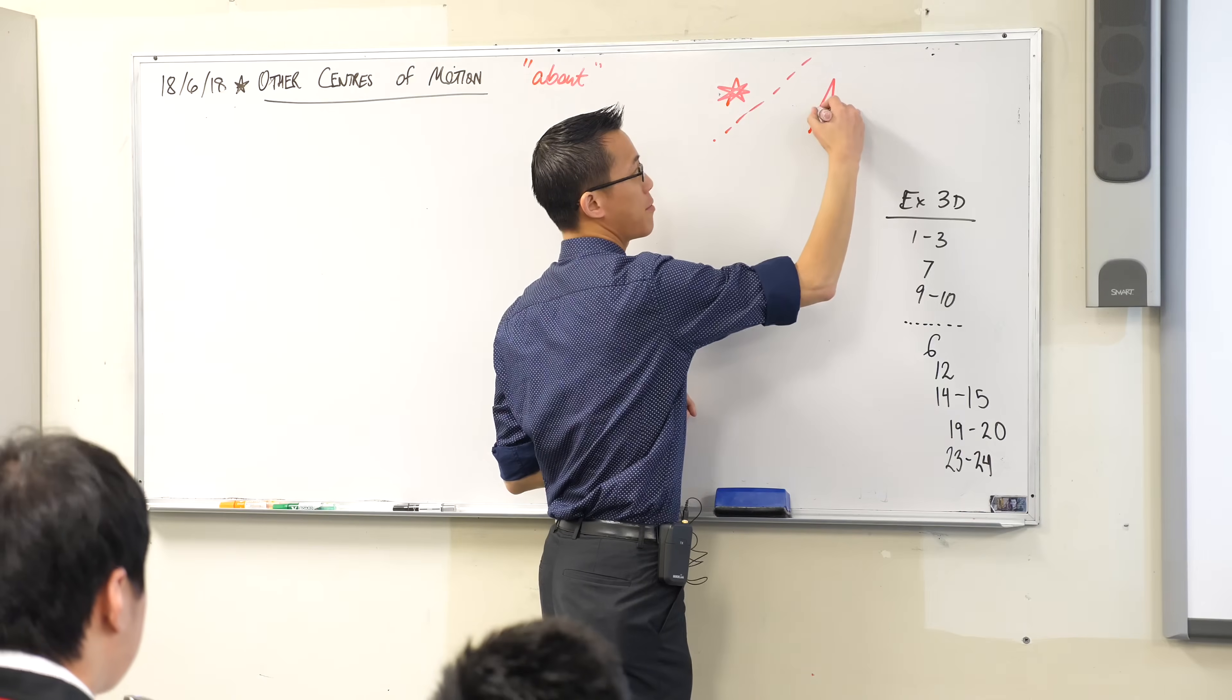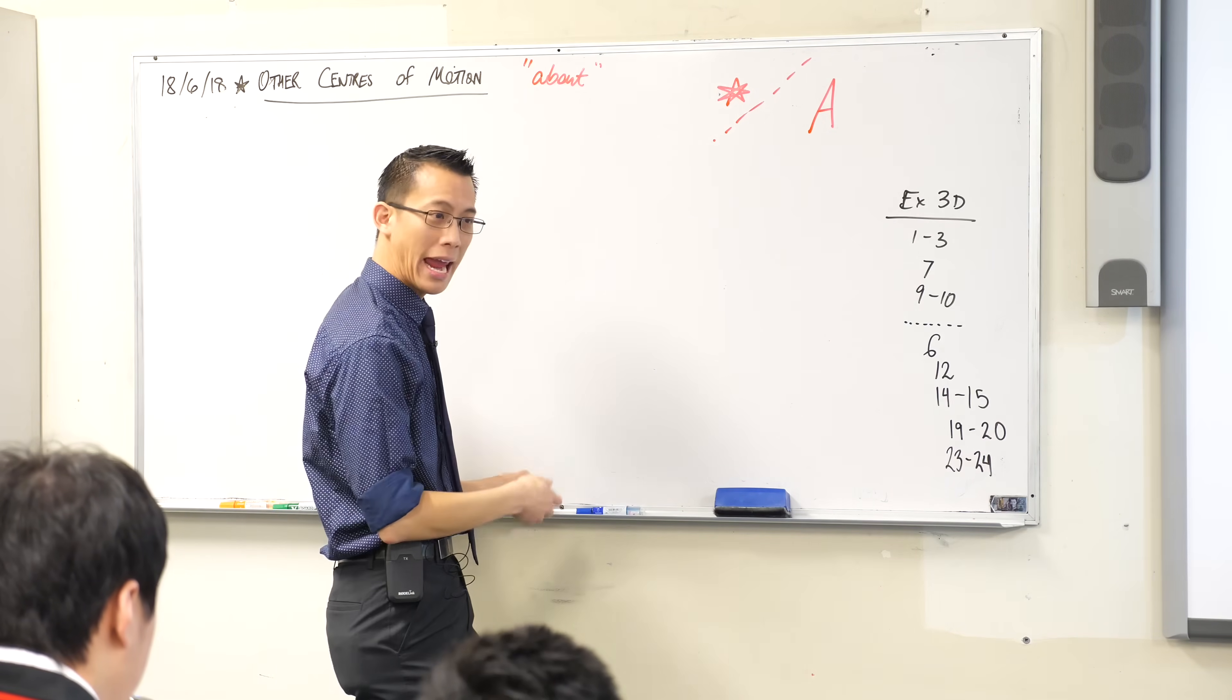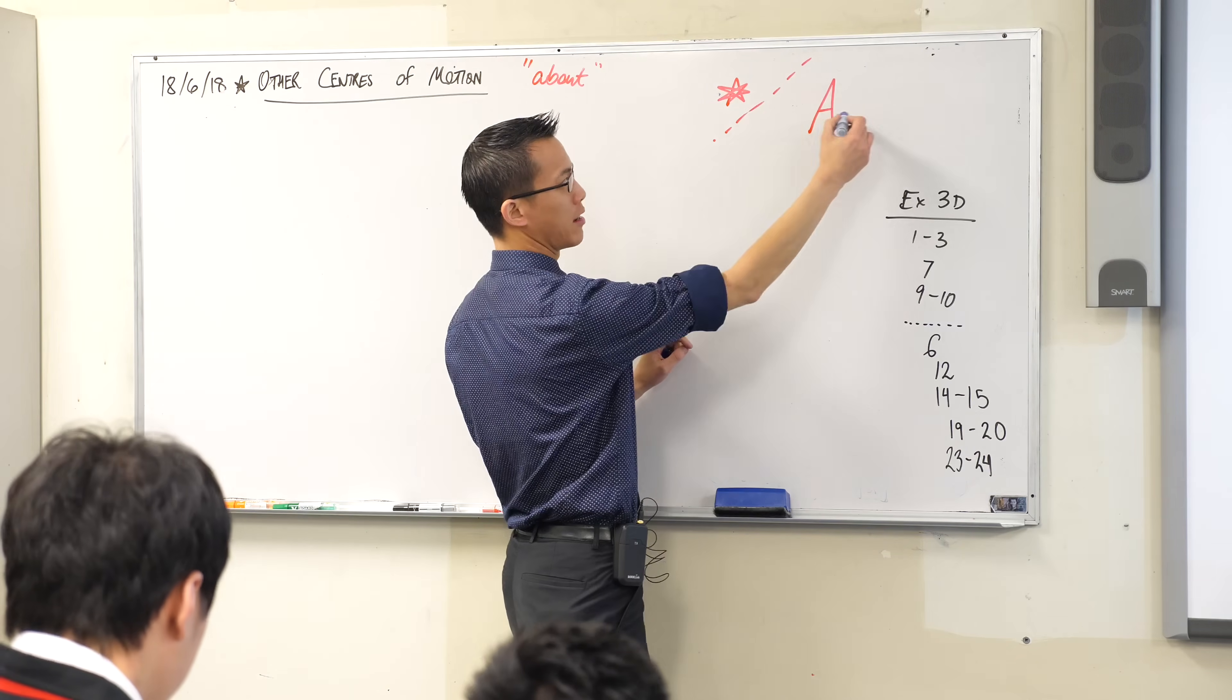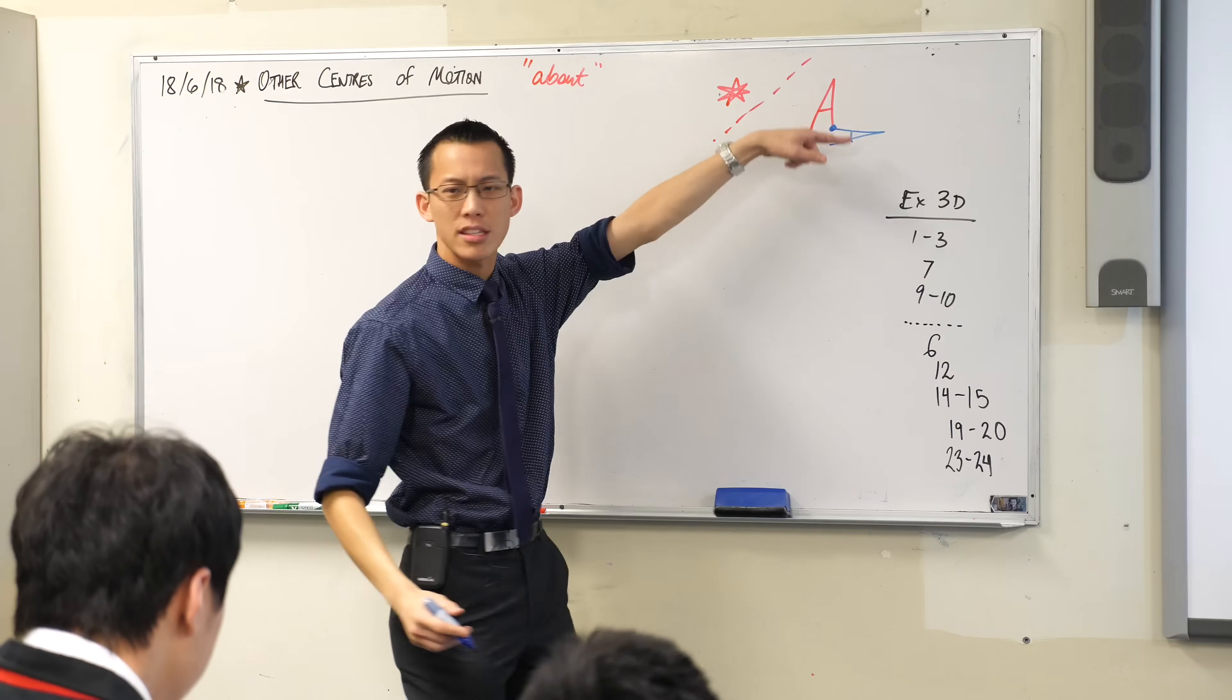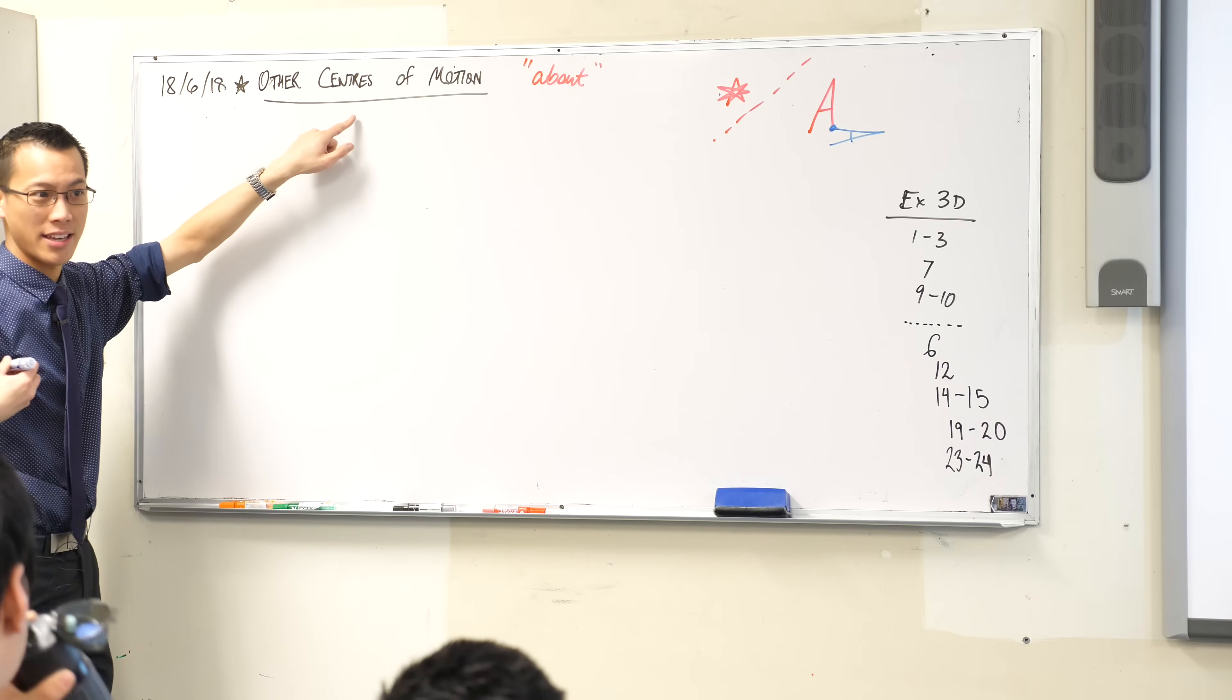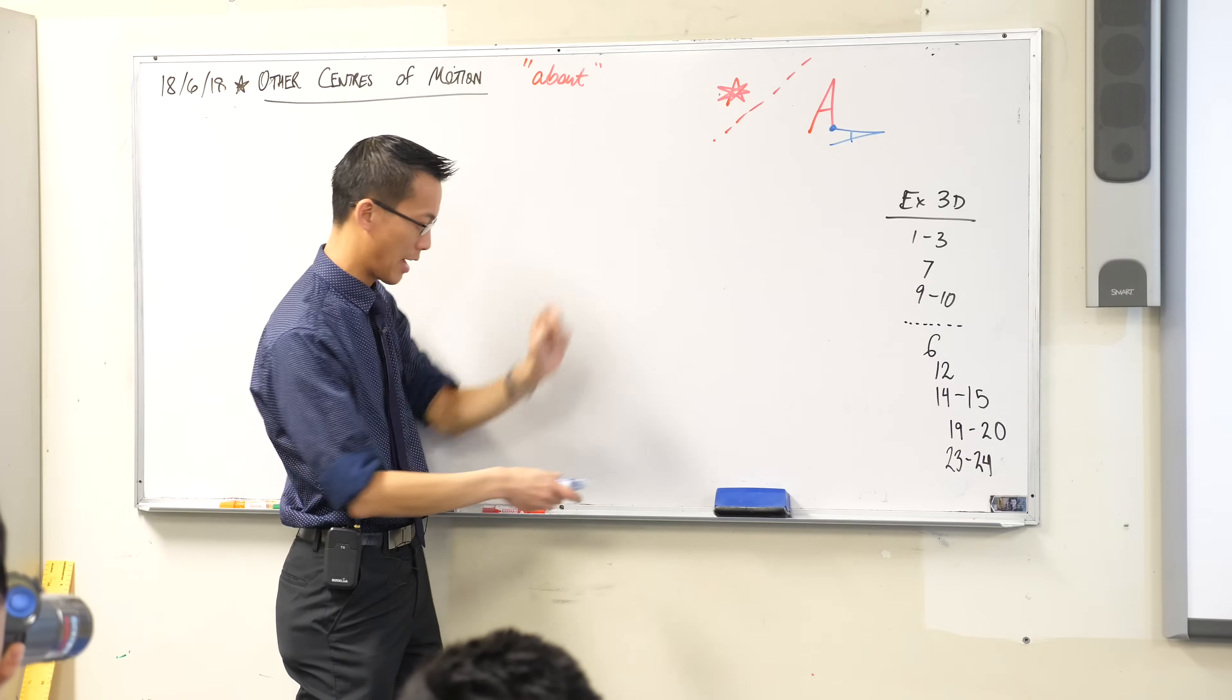Or we might say, here is a shape, right? And I would like you to rotate it, but I don't just want you to rotate it anywhere, I want you to rotate it about a particular point, like say that, right, which is why you won't just get a shape on top of itself. That's the pivot point, right? So when you see the word 'about,' it actually means something very specific in our context, that the center of motion is whatever is about to come after the word 'about,' okay?